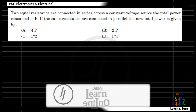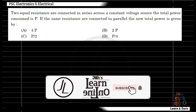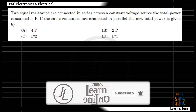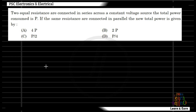Two equal resistances are connected in series across a constant voltage source. The power consumed is P. If the same resistances are connected in parallel, the new total power is given by — there are 2 equal resistances. Series connected with equal resistance gives total resistance 2R. The total power consumed is V² divided by 2R. This equals P.